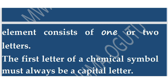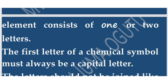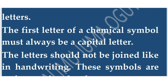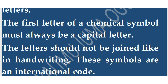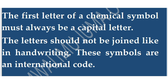For example, potassium has the chemical symbol K, derived from the Latin name Kalium. Magnesium has the symbol Mg, with M as the capital letter and g as a small letter, derived from its English name. The first letter of a chemical symbol must always be a capital letter. The letters should not be joined in handwriting. These symbols are an international code.